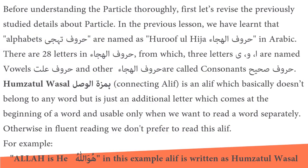Before understanding the particle thoroughly, let's revise the previously studied details about particle. In the previous lesson, we learnt that alphabets — huruf al-tahajjee — are named as huruf al-hijjah in Arabic. There are 28 letters in al-hijjah, from which three letters — alif, waw, and ya — are named vowels (huruf al-liin), and the other huruf al-hijjah are called consonants (huruf al-sahih).